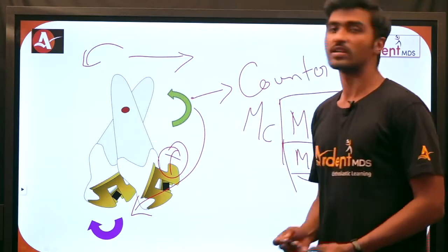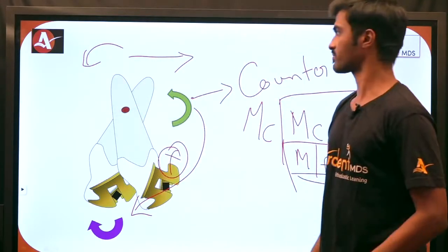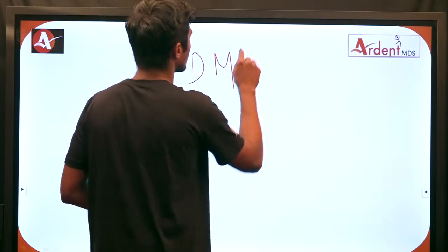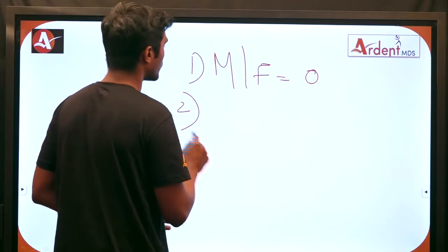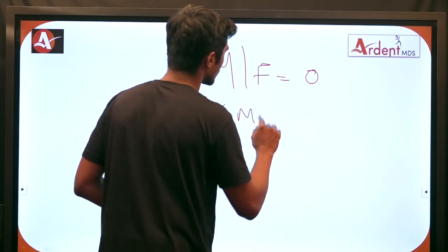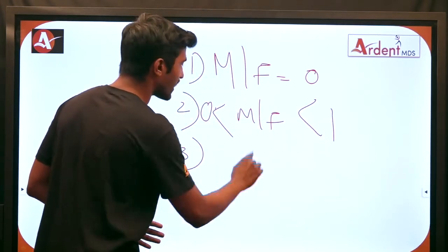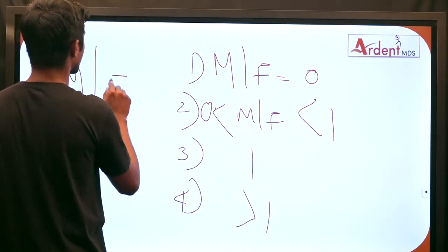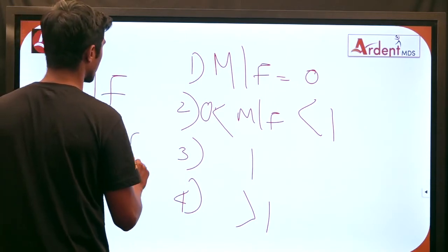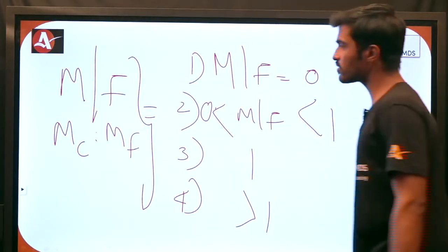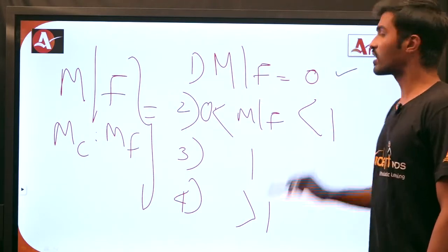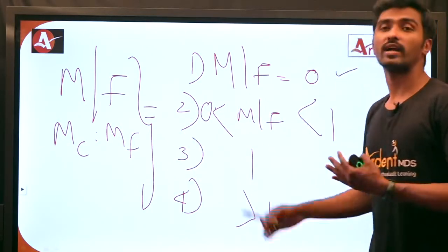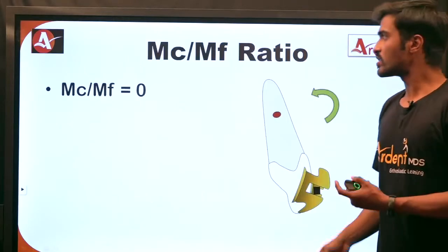When I give a counter moment, the root gets repositioned accordingly. The moment to force ratio has four different scenarios: it can be equal to 0, greater than 0 but less than 1, equal to 1, or greater than 1.